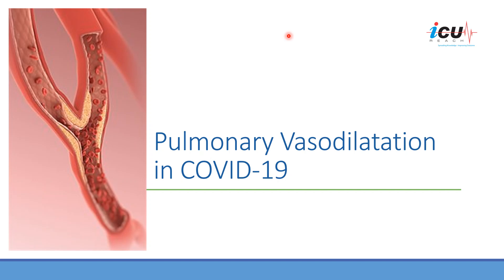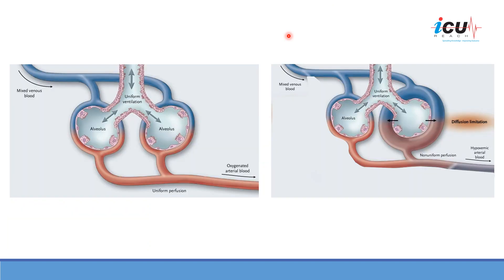There were a few questions posted on my last video about the etiology of hypoxemia related to pulmonary vasodilatation in patients with COVID-19 respiratory failure. I'll answer those questions in more detail in this short video. The situation is very similar to the hepatopulmonary syndrome seen in patients with liver cirrhosis, where nitric oxide is directly responsible for the pulmonary vasodilatation.